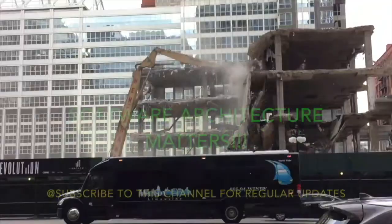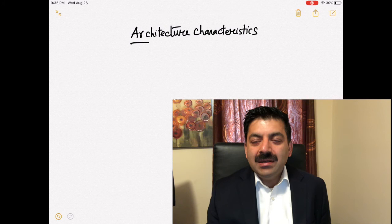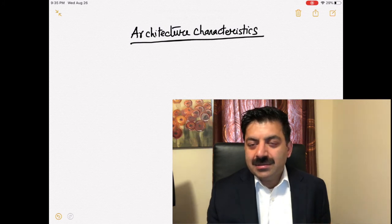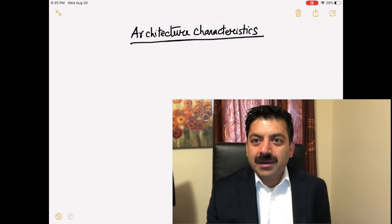Today we will discuss Chapter 4 of the book Elements of Software Architecture written by Mark and Neil Ford. In this chapter, we'll explore what are architecture characteristics and what it means when we say we need to identify architecture characteristics.